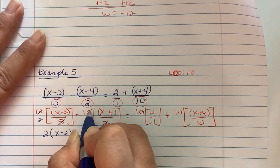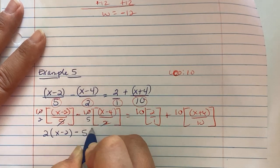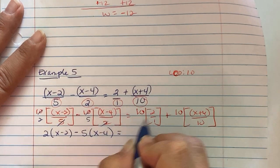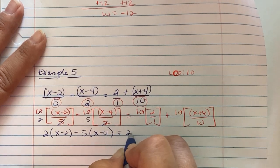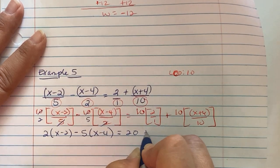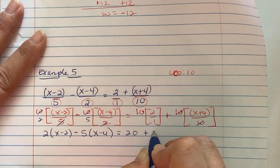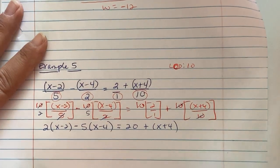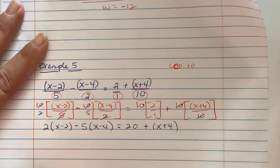The reason I'm doing this is so I can reduce fractions and get rid of your denominators. We notice that 5 goes into 10 twice, so we see 2 parentheses x minus 2 slide down, minus sign. Remember, the sign goes with it. 2 goes into 10 five times, so I see a 5 parentheses x minus 4 slide down. Equals nothing reduces, so 10 times 2 is 20, plus sign. Tens cancel and we get x plus 4.